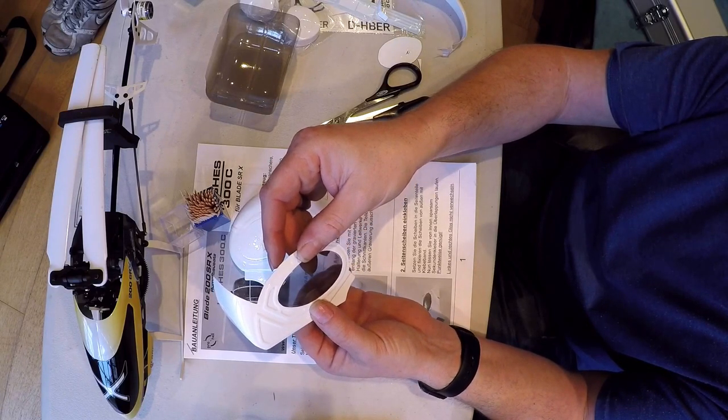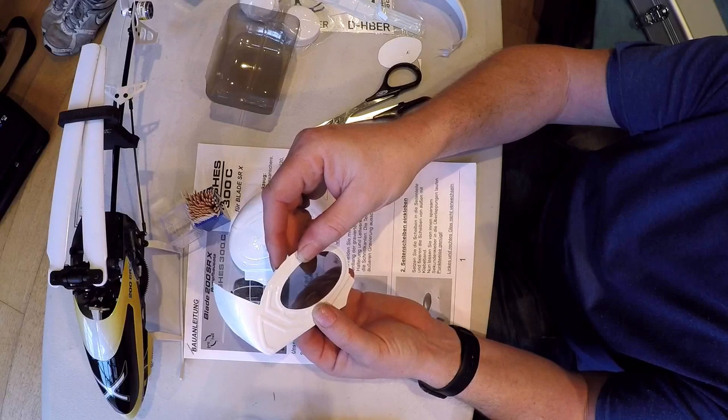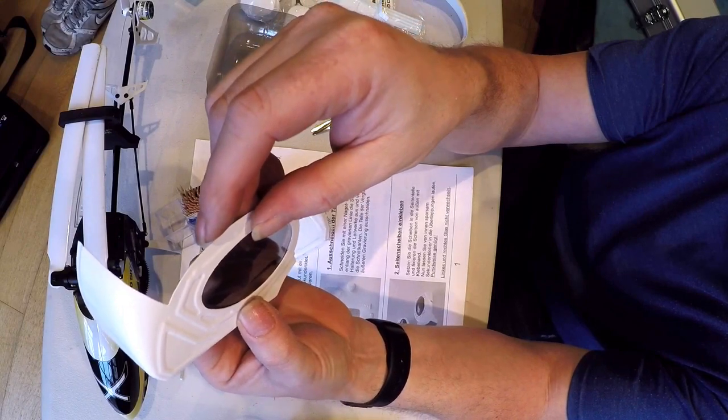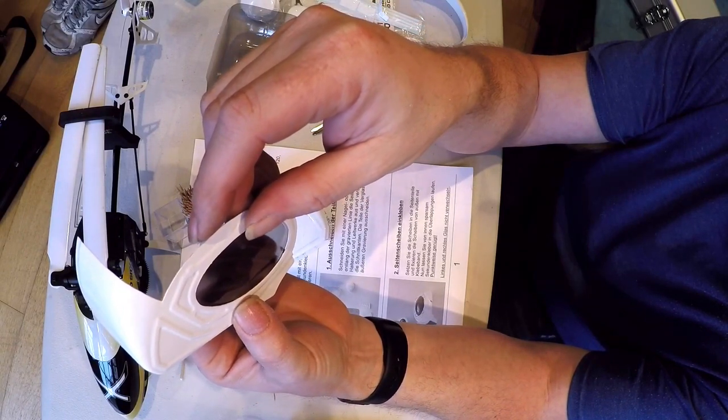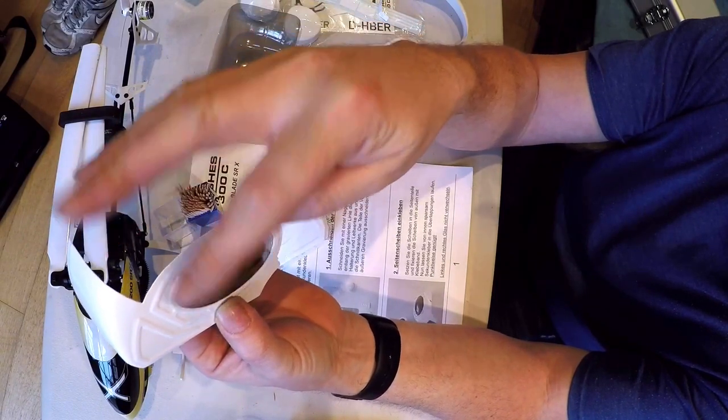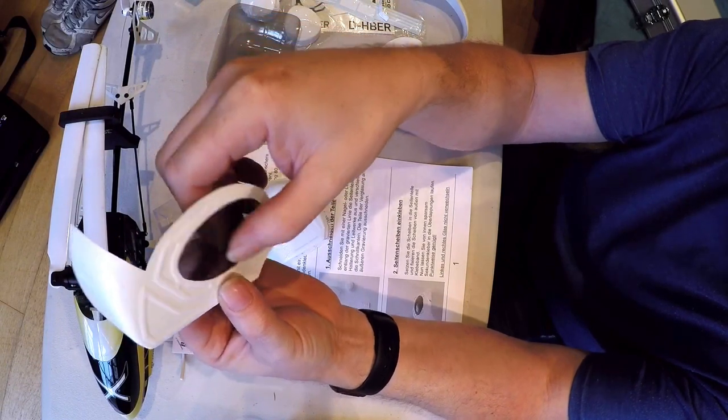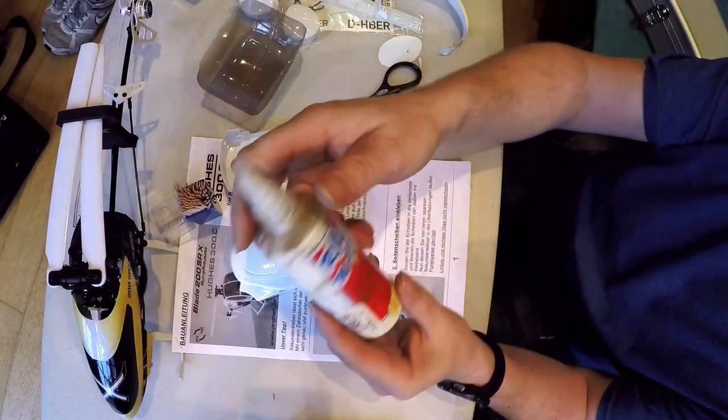Now the instructions tell you to use tape and super glue. I haven't had great experience of super glue and transparent canopies. You know, there's often a risk of fogging. So what I'm going to be using is I'm going to be...